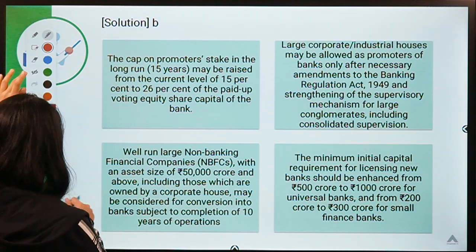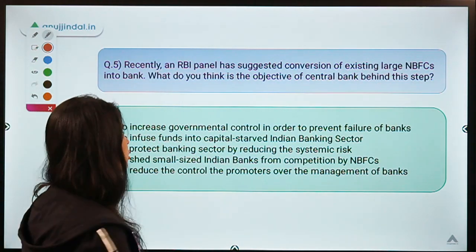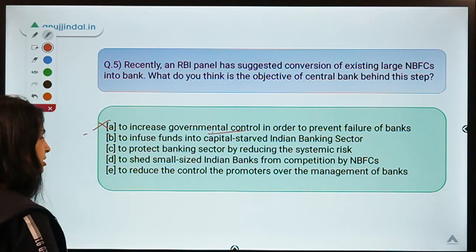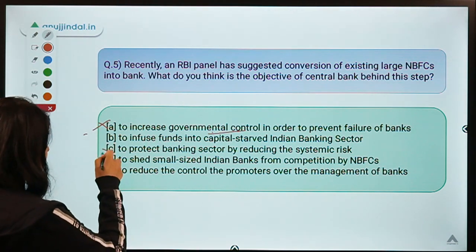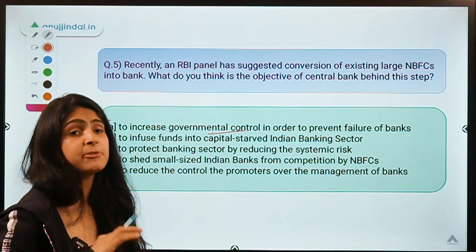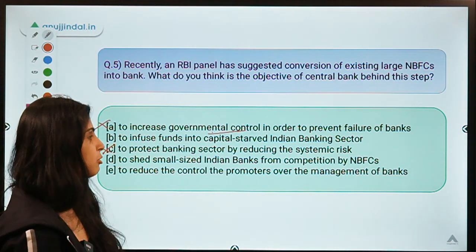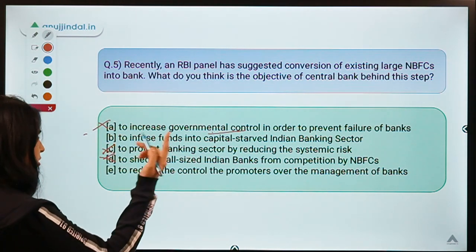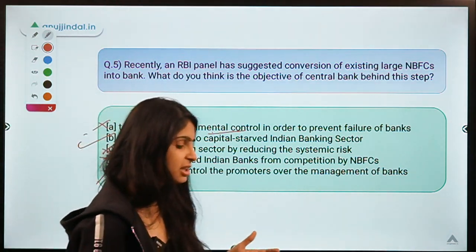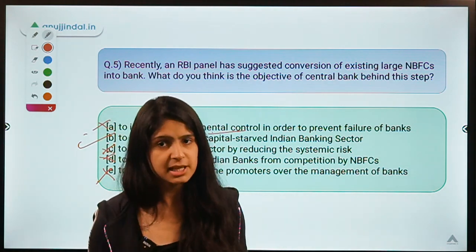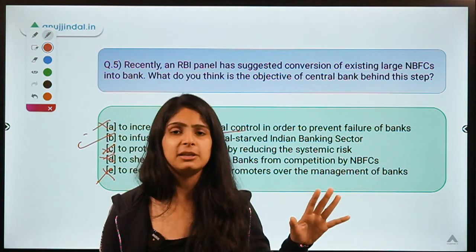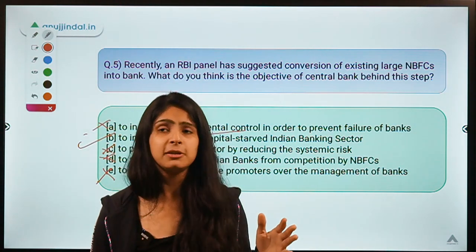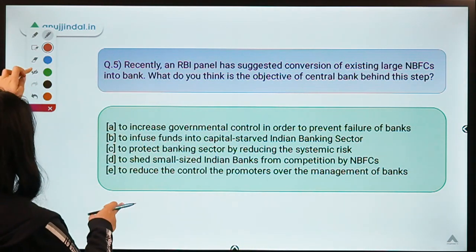Going back to the other options: increasing governmental control is not correct, since allowing private players will decrease government control. Protecting the banking sector by reducing systemic risk is not correct — if NBFCs are allowed to become banks and not regulated properly, systemic risk could increase. Shielding small banks from competition is also not correct, as this would actually increase competition. Reducing promoter control is not correct — promoter control is going to increase. The correct objective is to infuse funds into the capital-starved Indian banking sector, as big businesses have the capital that the sector needs.